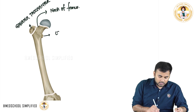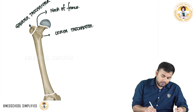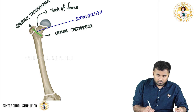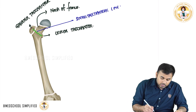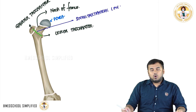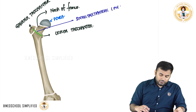This one is called the lesser trochanter. Between the greater trochanter and lesser trochanter, if we draw a line, this line is called the intertrochanteric line. Also, this opening here is called the fovea — this is the fovea where a ligament called the ligament of the head of the femur will attach.